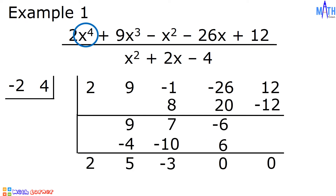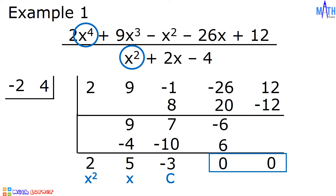Since the degree of the dividend is 4 and the degree of the divisor is 2, if we divide x⁴ by x², the answer is x². This means the degree of the quotient is 2. The first number in the fifth row is the coefficient of x². 5 is the coefficient of x. Negative 3 is the constant term. The last two numbers form the remainder. Since they are both 0, the remainder is 0, and the answer is 2x² plus 5x minus 3.